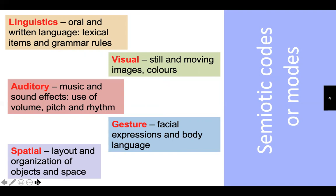Auditory includes music, sound effects, volume, pitch, and rhythm. Gesture is what we learned in our non-verbal communication lesson — facial expressions and body language, and how we use non-verbal communication as cues for messages. Spatial is about the layout and organization of objects and space.